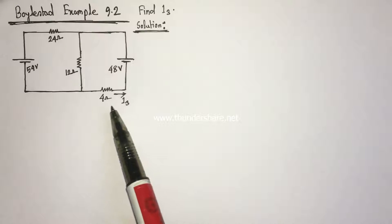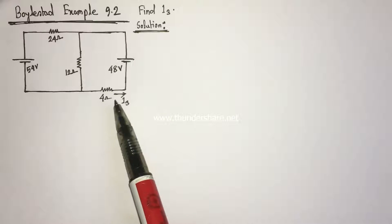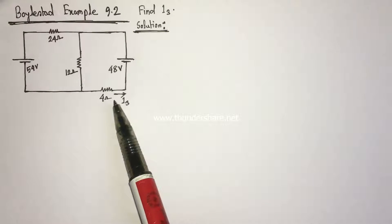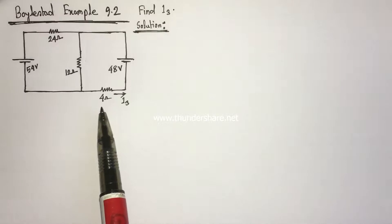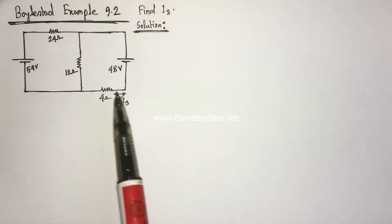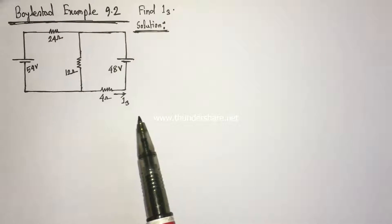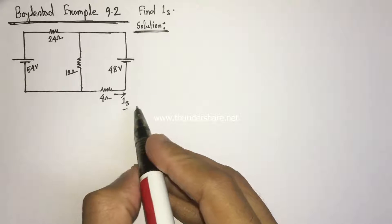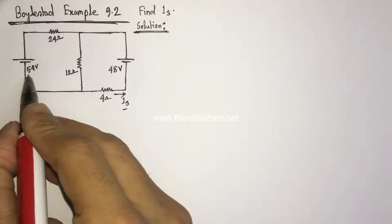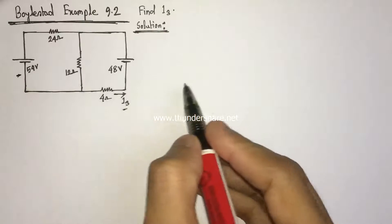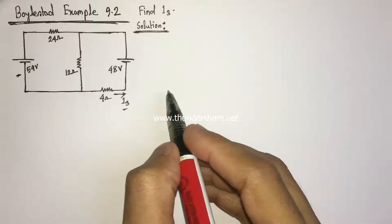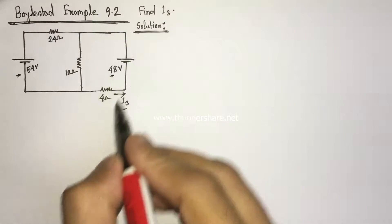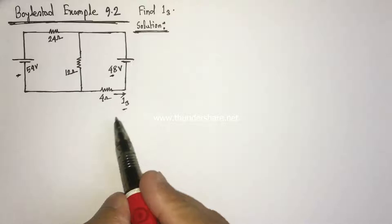Superposition theorem states that the current flowing through any element of a network will be equal to the algebraic sum of currents produced independently by each source. Here, I3 current due to the independent effect of the 54-volt voltage source and due to the independent effect of the 48-volt voltage source need to be identified separately.